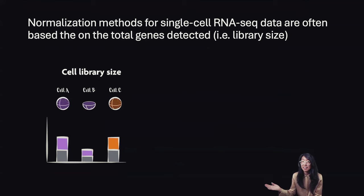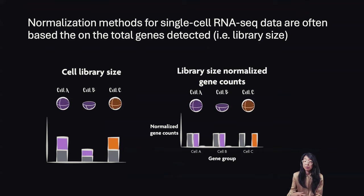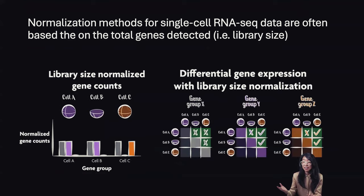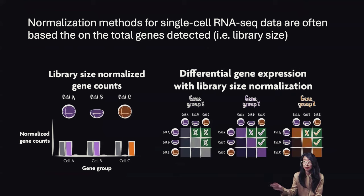If we compute the library size for each cell in our hypothetical example, it becomes clear that cell B just has a smaller library size compared to the other two cells. If we perform library-size normalization by dividing every gene by this total number of genes detected, we can also multiply by a constant scaling factor like a million to convert our observed gene expression counts to normalized gene expression magnitudes — as if we had sequenced each cell to the same library size of a million. Given these counts-per-million library-size normalized values, we derive the correct differential expression results where group X genes are not differentially expressed between any of our cells, and group Y and group Z genes are differentially expressed between cell type 1 and cell type 2, and not within cells of cell type 1.